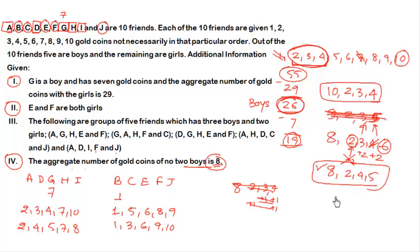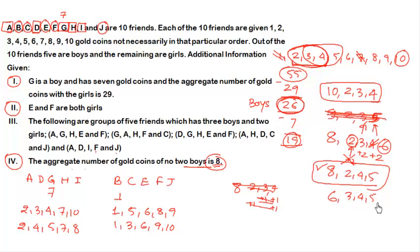To summarize, there are exactly two valid coin distributions. In Case 1 boys have {2, 3, 4, 7, 10} and girls have {1, 5, 6, 8, 9}. In Case 2 boys have {2, 4, 5, 7, 8} and girls have {1, 3, 6, 9, 10}. With both the gender identification and the coin possibilities established, we can now move to the questions.